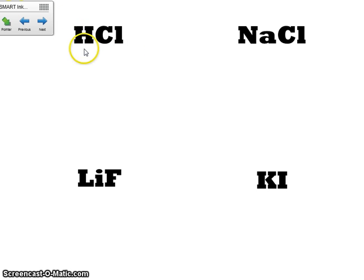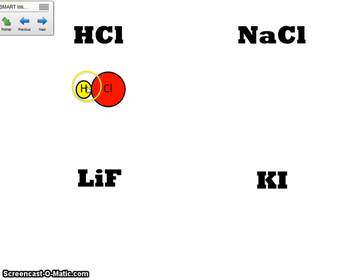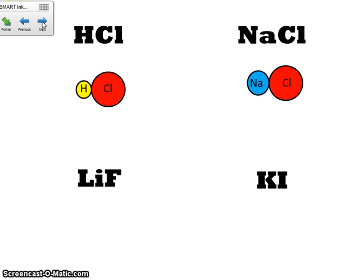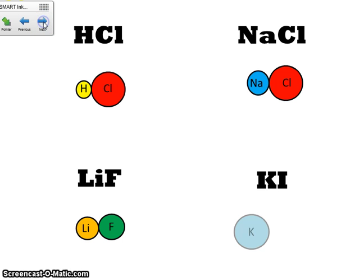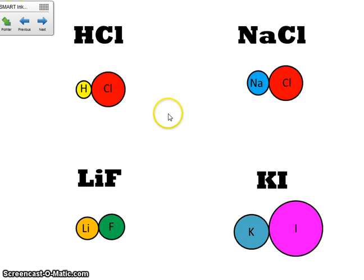So we have the formula HCl. There are two symbols in that formula: H and Cl. H stands for hydrogen, and Cl stands for chlorine. We draw them touching because they're bonded together. Over here, Na and Cl are bonded together. This one we're going to have Li — look at your periodic table, Li stands for lithium — and F stands for fluorine. Last one, K and I: K is potassium, and I is iodine. So potassium iodide is what this compound would be. The formula shows you exactly which atoms are bonded together.